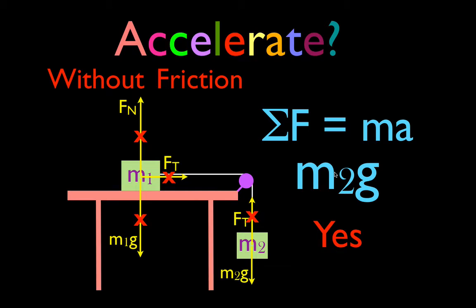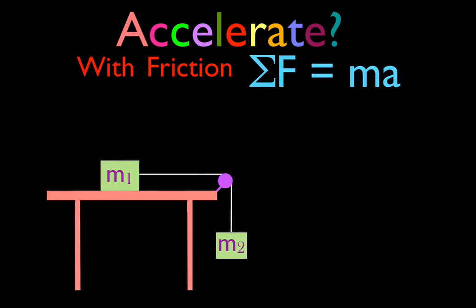Now let's look at the same situation but add friction. If we add friction, there are really two possibilities: M1 could accelerate to the right and M2 down, but if there's enough friction between M1 and the table, the objects will not move at all. Let's figure out when these objects will accelerate and when they will not. If they're going to accelerate, we need an unbalanced force, so let's draw in all the forces.